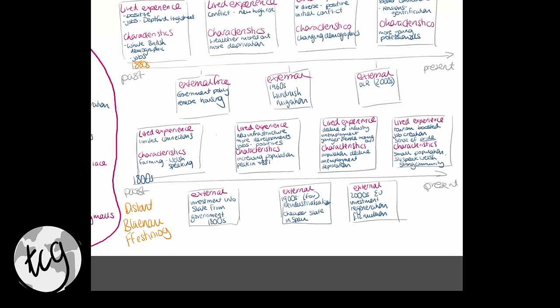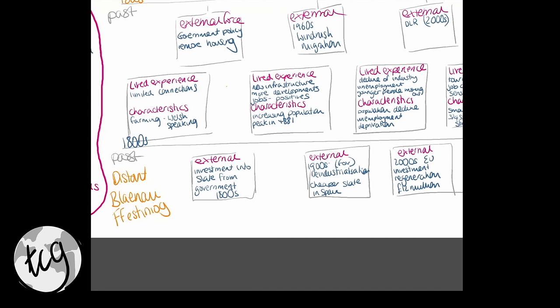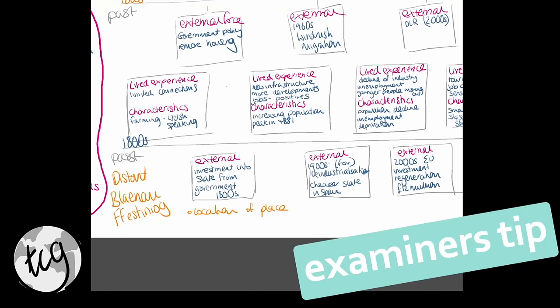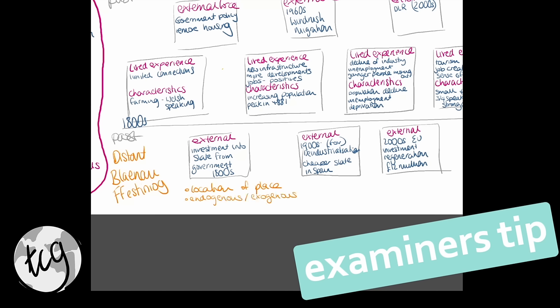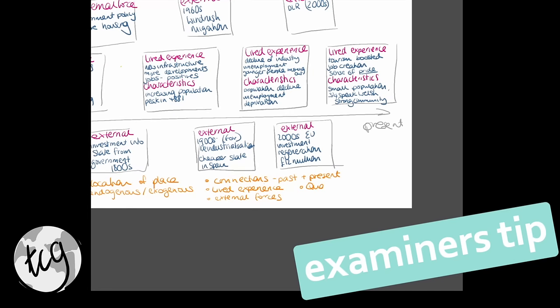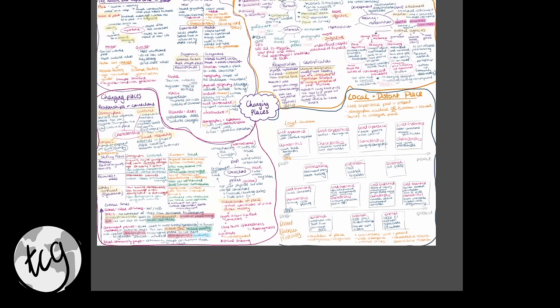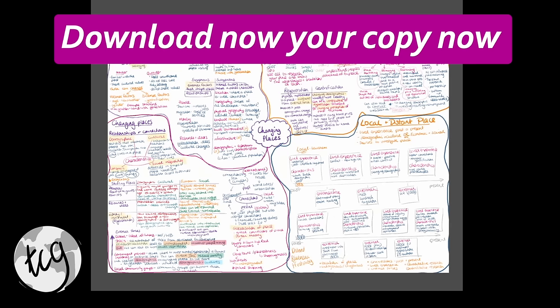This is how I would summarise your place studies — by looking at a timeline of how they've changed. Bear in mind you need to understand how you've researched your place: your location, the endogenous and exogenous factors which contributed to character, the connections past and present, external forces which have changed your place, how lived experience has changed, and your qualitative and quantitative research to understand your place. That brings us to the end of our mind map for Changing Places. If you've got any questions, let me know — this will be saved so you can download it, and please write any questions in the comments below.